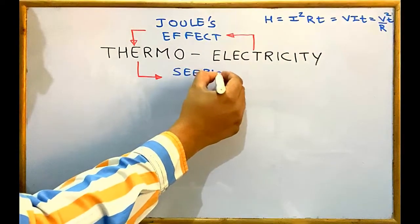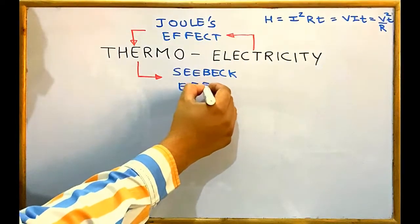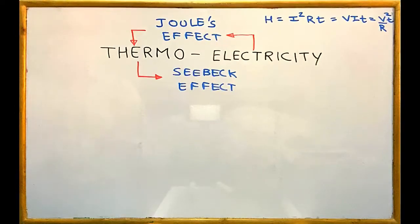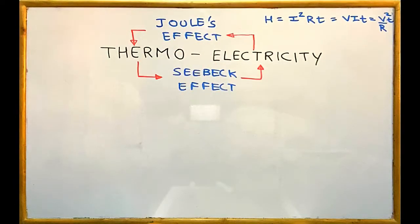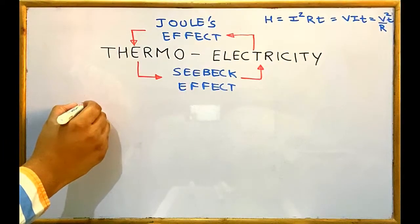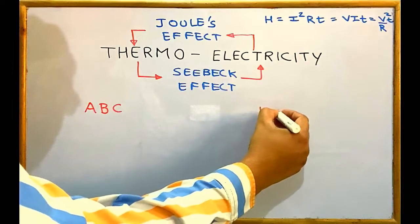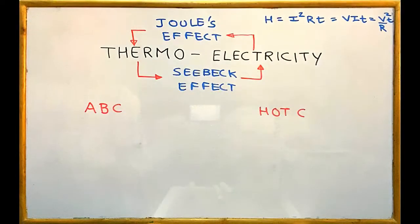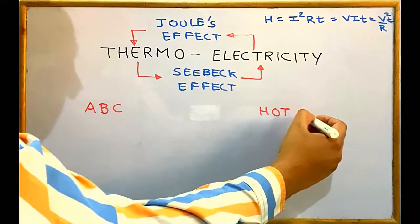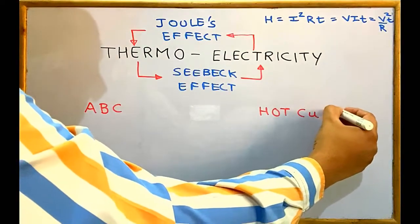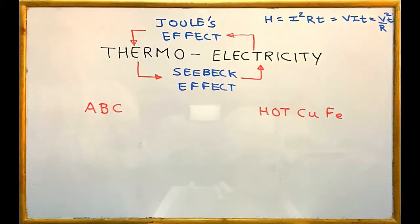Seebeck was the name of the scientist, so you can say Seebeck effect or Seebeck's effect. Seebeck effect is the conversion of heat into electricity. To understand it, there are two examples to remember, and the shortcuts to remember them are ABC and hot coffee.